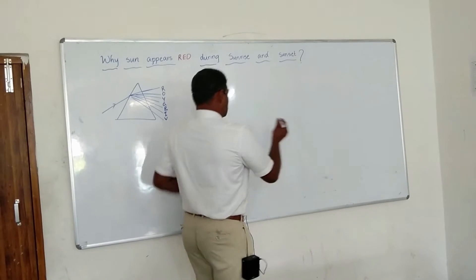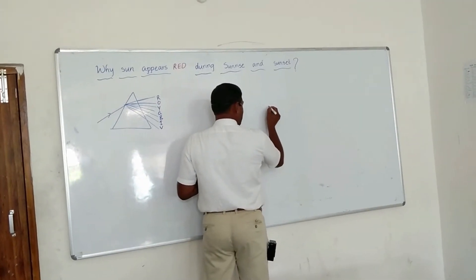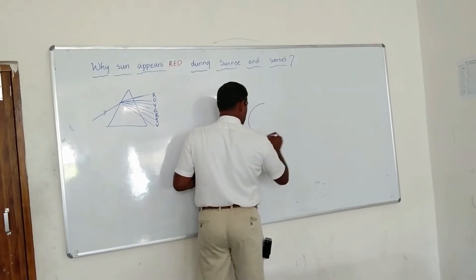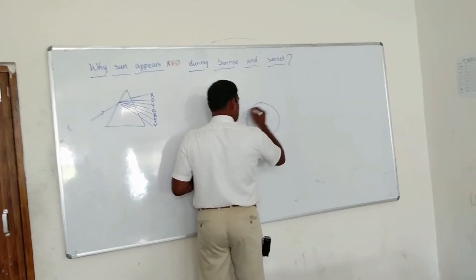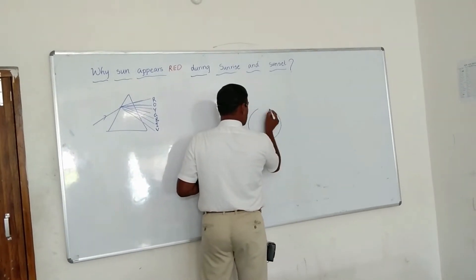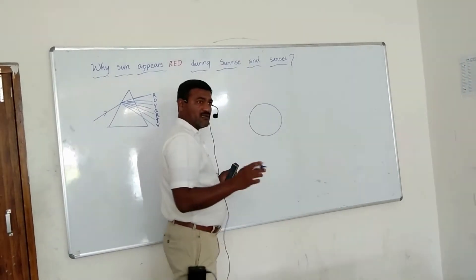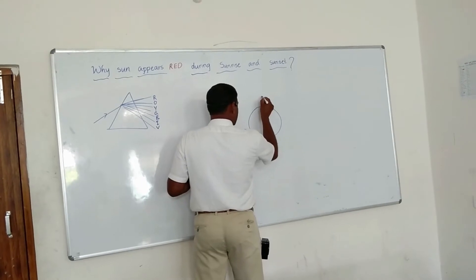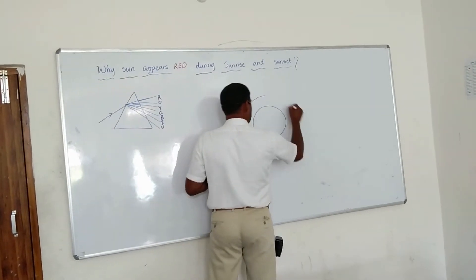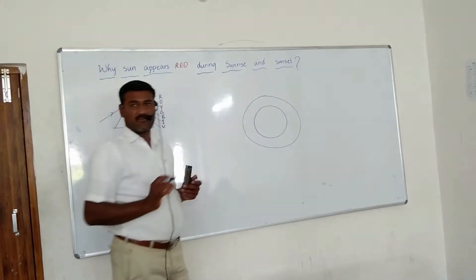Now, Earth is not exactly round — it is spherical or slightly oval. And therefore the atmosphere around the Earth is also oval, not perfectly spherical.